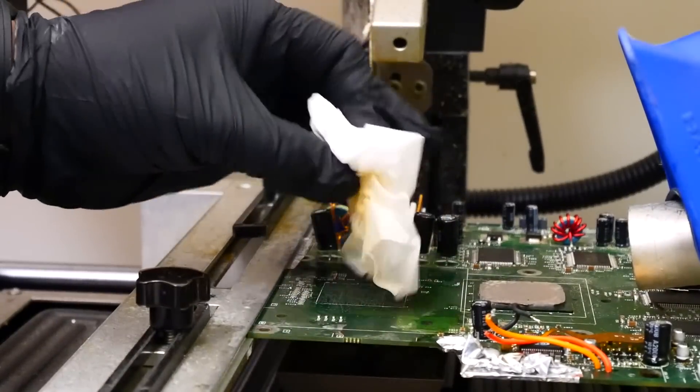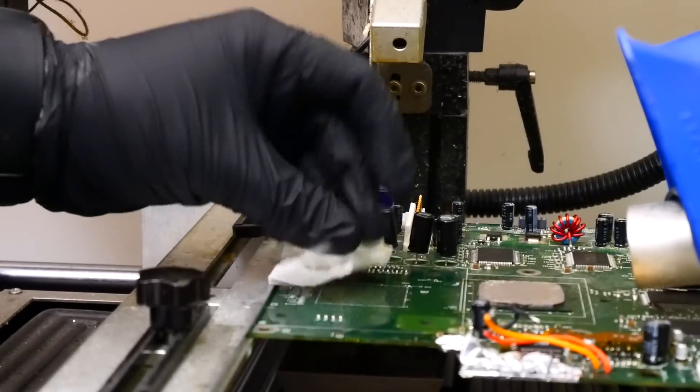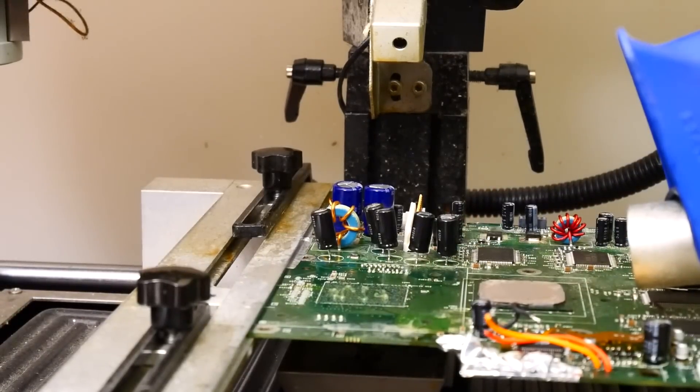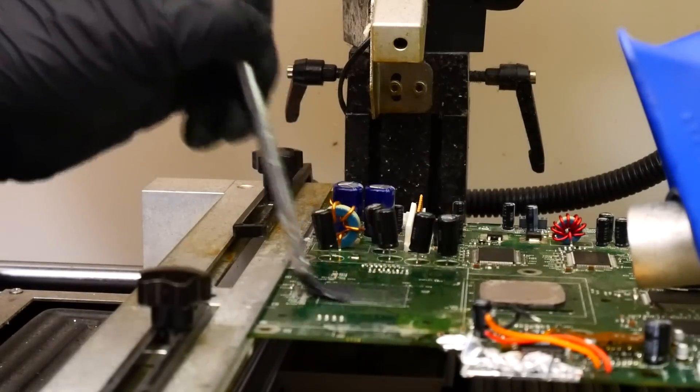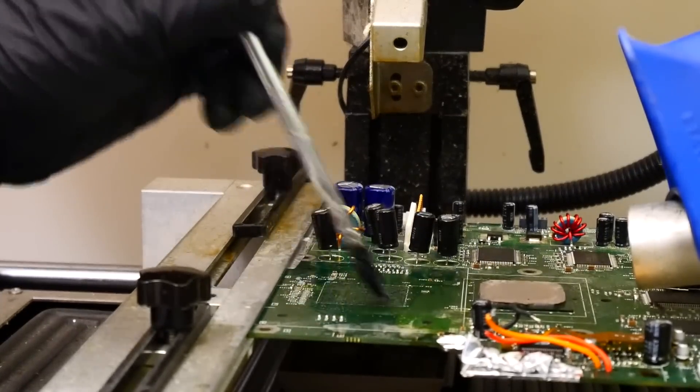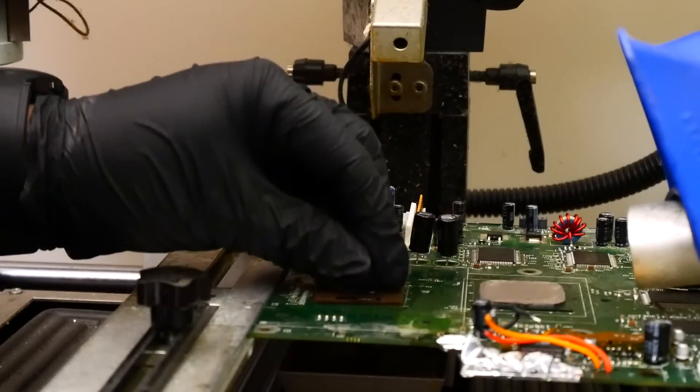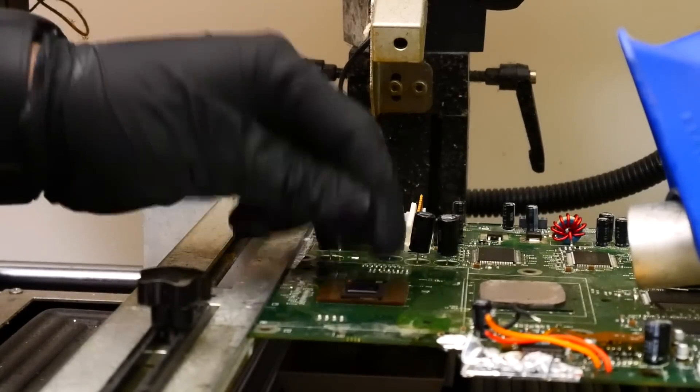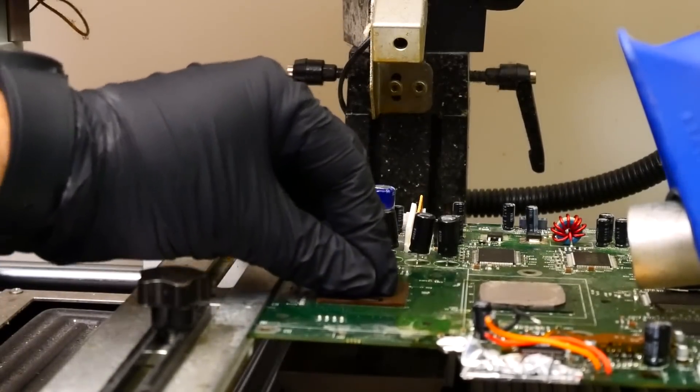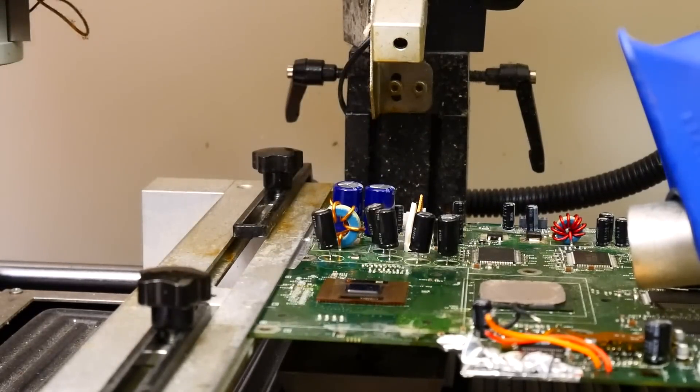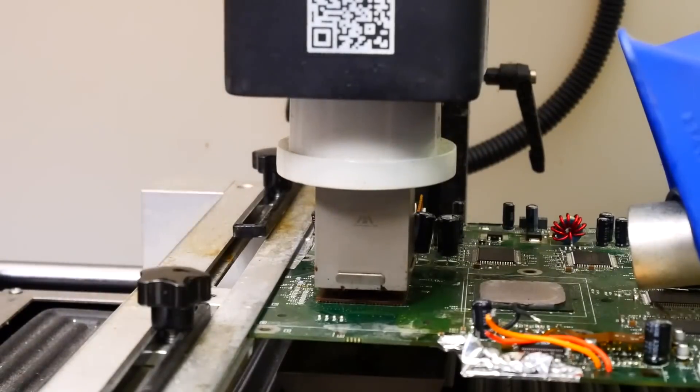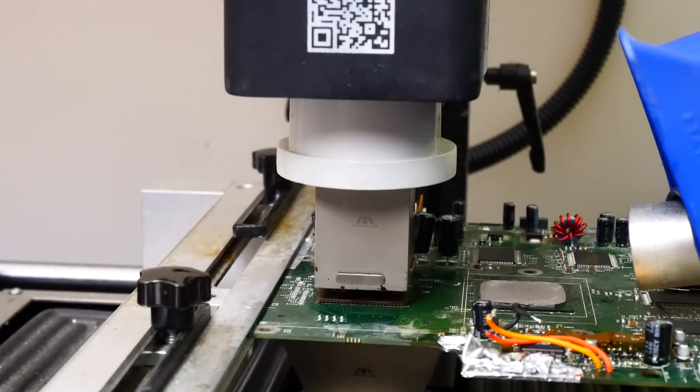And we're removing the spent flux. And now we'll apply some BGA flux. And we'll go ahead and apply that with our brush. And now we'll go ahead and install our upgraded CPU. And the CPU fits right on there, right into the groove. We'll go ahead and start up our profile and we'll see you back at the Xbox.